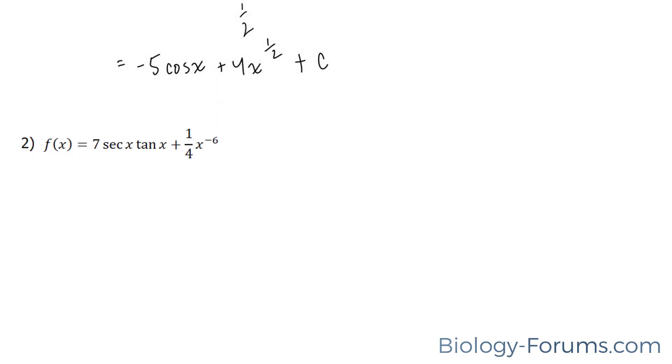Here, they're asking us to find the antiderivative of this function: 7 secant x times tangent x plus a quarter times x to the power of negative 6. This is the easy part.